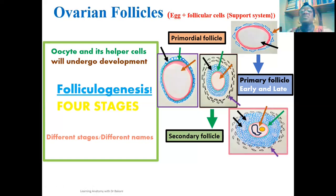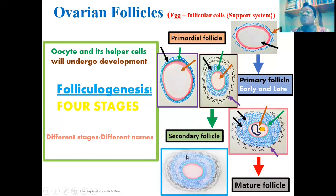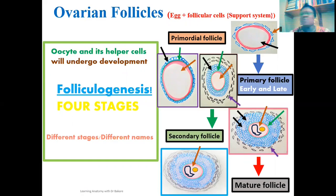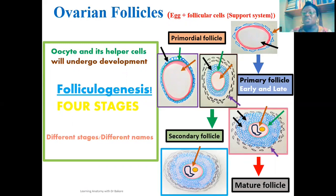The secondary follicle is then transformed into the final mature stage — referred to as the mature or Graafian follicle. The secondary oocyte now has a haploid number of chromosomes with the first polar body. At the mature follicular stage, there is another arrest — the oocyte is now arrested at the metaphase of the second meiotic division.